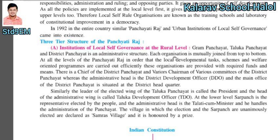At the rural level, the institutions for local self-governance are Gram Panchayat, Taluka Panchayat, and District Panchayat — this is the administrative structure. Each organization is mutually joined from top to bottom: Gram Panchayat is joined with Taluka, and Taluka is joined with the district. At all levels of Panchayat, the task is local development. Schemes and welfare-oriented programs are carried out efficiently, and these organizations are provided with the required funds and means.